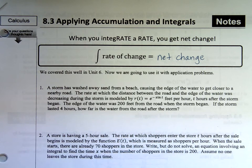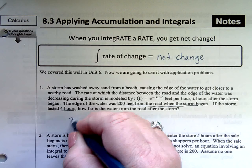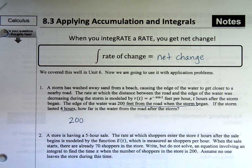Let's decipher these examples. A storm has washed away sand from a beach, causing the edge of the water to get closer to a nearby road. The rate at which the distance between the road and the edge of the water was decreasing during the storm is modeled by e to the negative sine of t feet per hour. The edge of the water was 200 feet from the road when the storm began. That's an initial position. If the storm lasted four hours, how far is the water from the road after the storm?